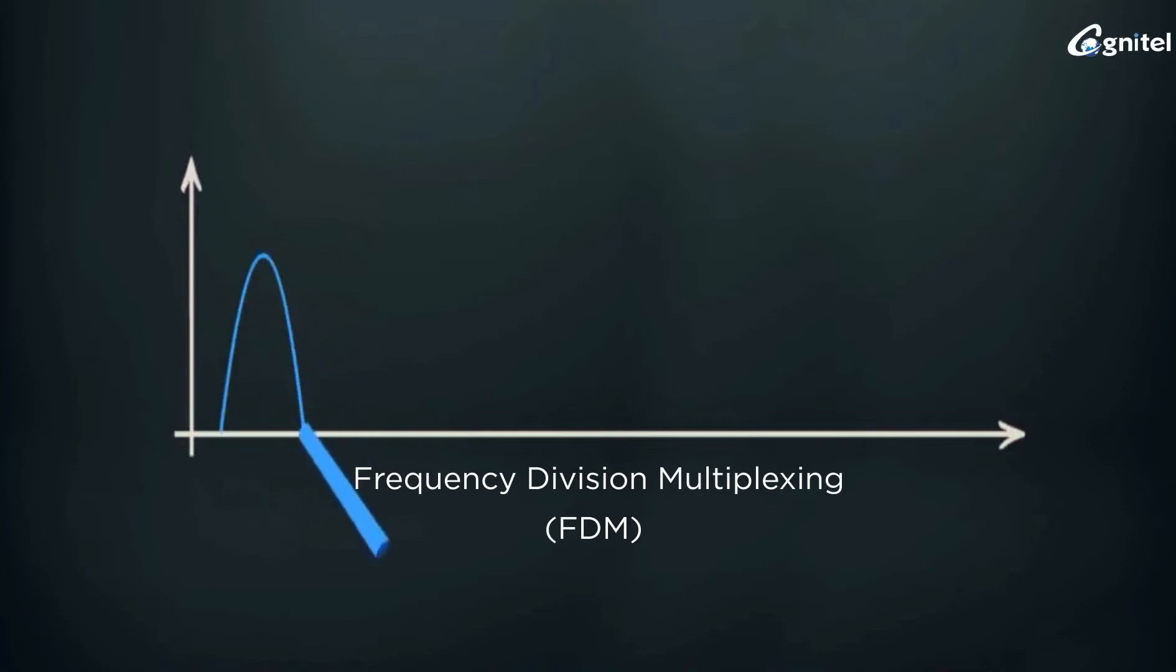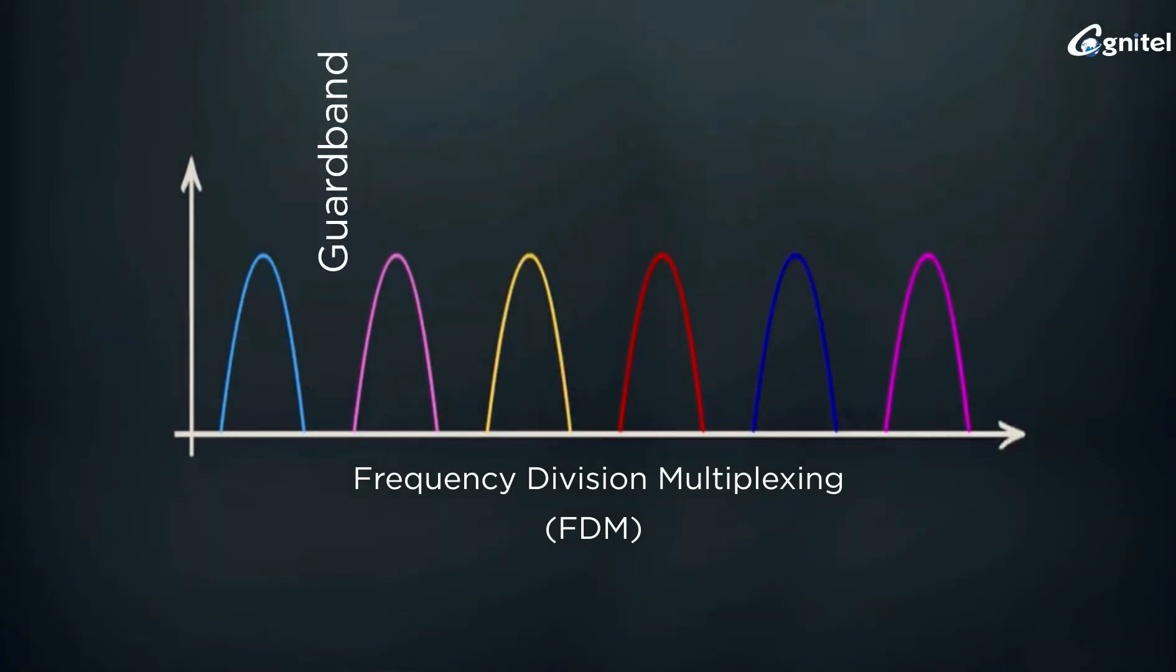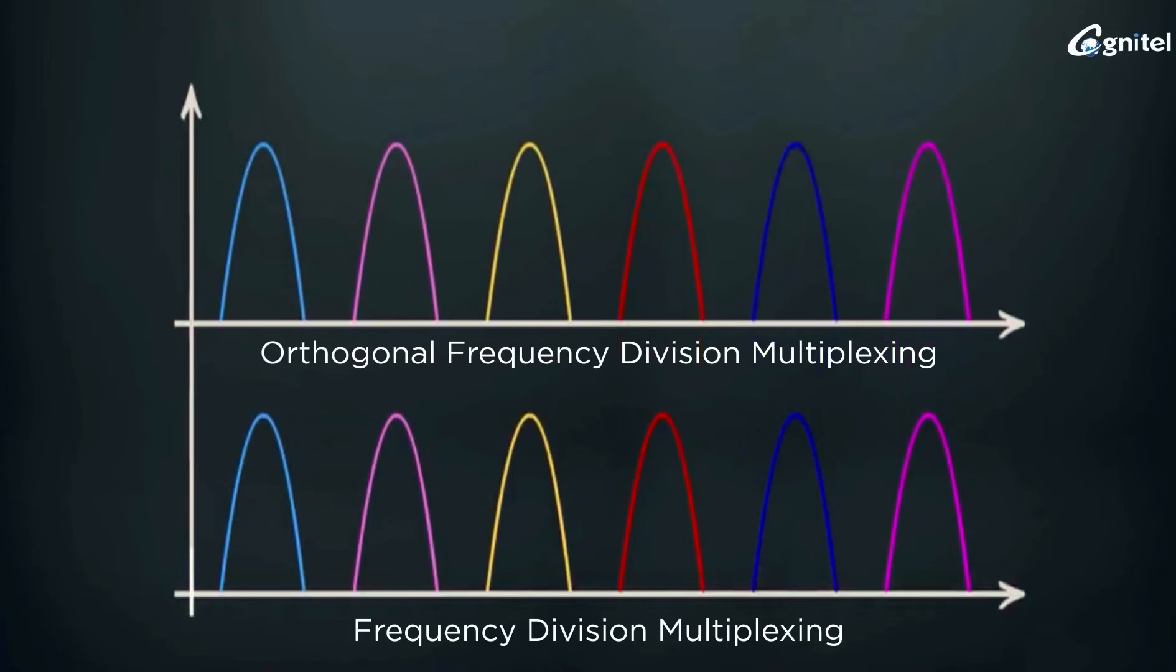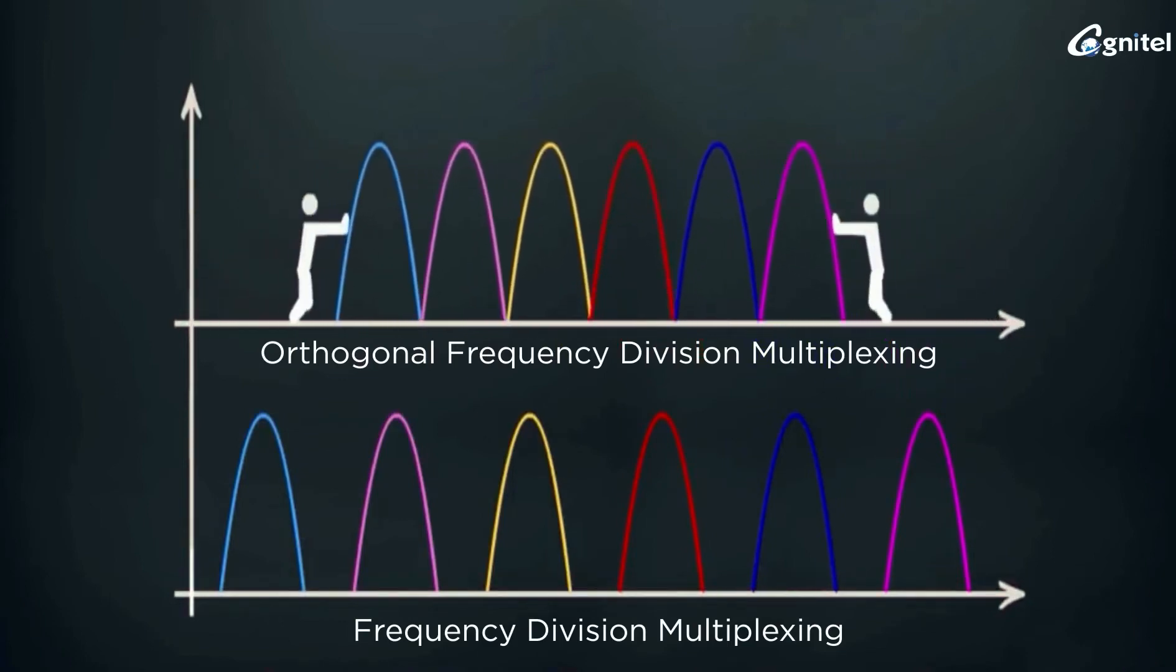A smart guard band between these sub-channels is used to avoid interference with adjacent channels. But in OFDM, these sub-channels are closely packed, overlapping with each other without any guard band.